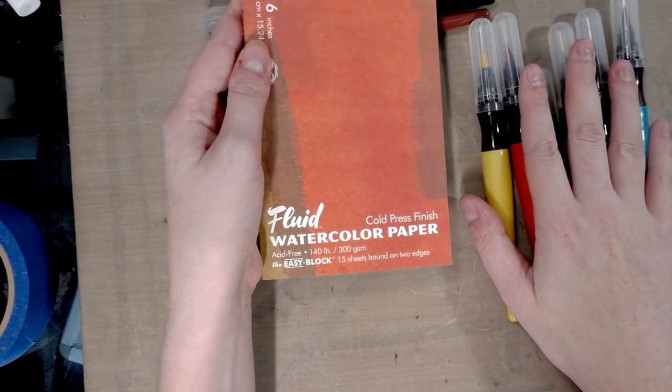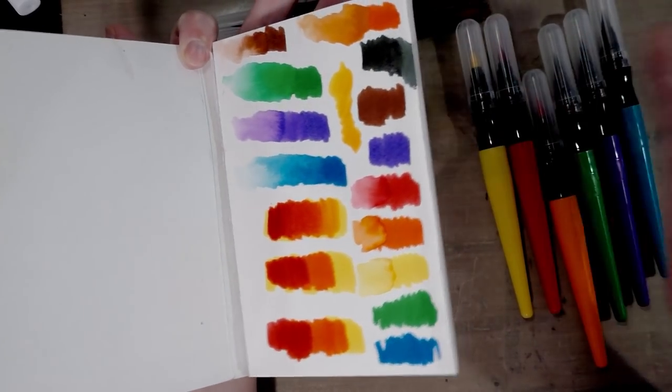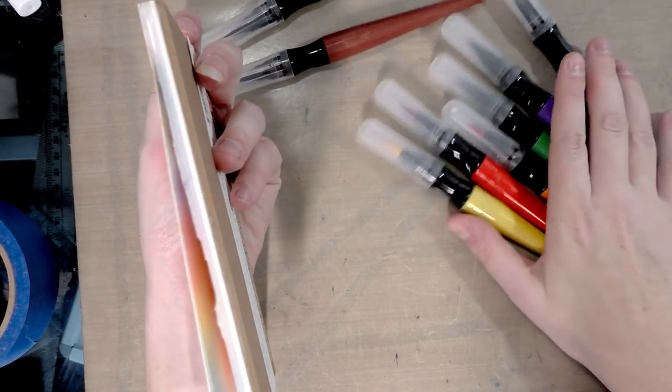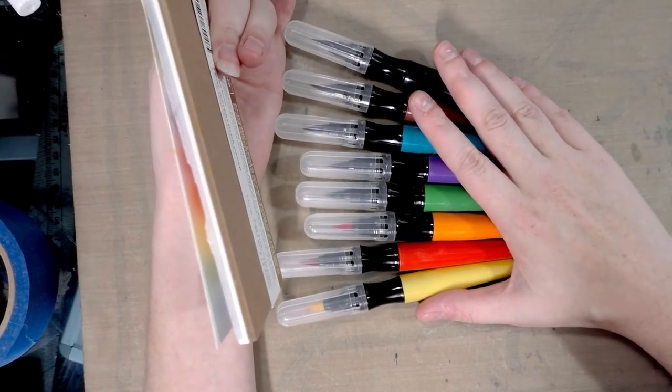These were tested on Fluid Easy Block cold press cellulose, that is wood pulp based watercolor paper. You could also use these on say Canson XL, which is also available at Walmart, Office Depot, so you don't have to go to any specialty stores to pick up a paper that will work with these. This is a tougher, heavier paper, about the same thickness as cardstock. I have a feeling with how much ink these put down, they would probably bleed through thinner papers or marker papers, so I would use a watercolor paper with them.